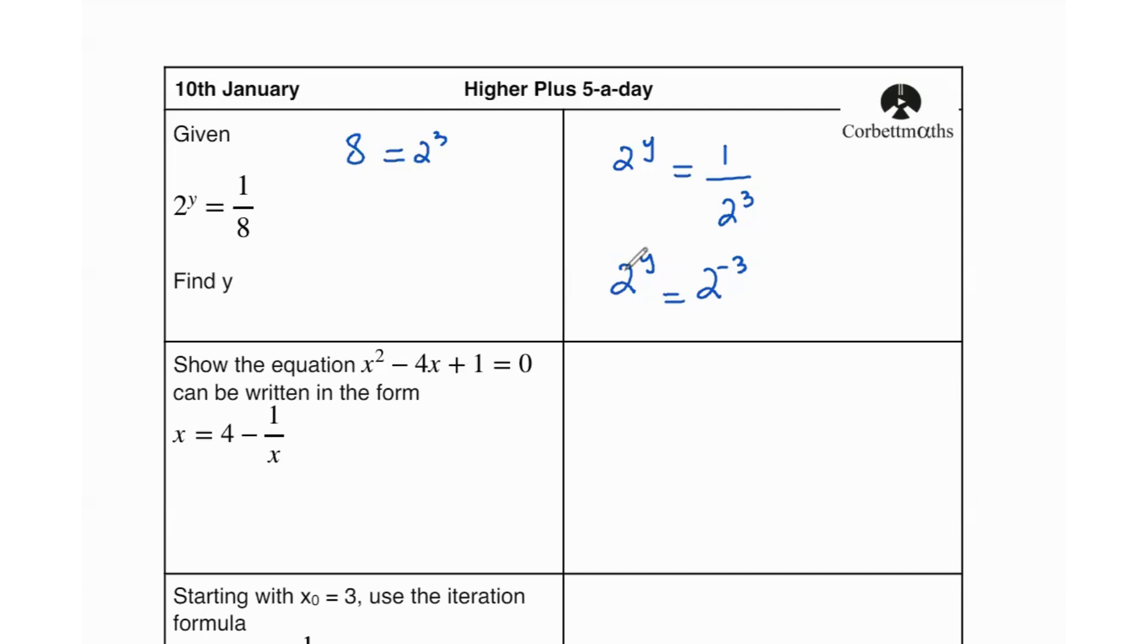One of the rules of indices is that when the bases are the same—the bases are 2 here—we can put the powers equal to each other, which means y becomes equal to negative 3, and that is your value.